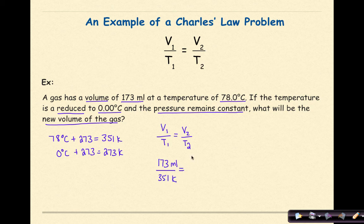That's equal to my V2, which is what I'm solving for, divided by 0 degrees Celsius, which we now know is 273 Kelvin. If I cross multiply and solve for V2 to the correct number of significant figures, I see that my new volume is 135 milliliters.